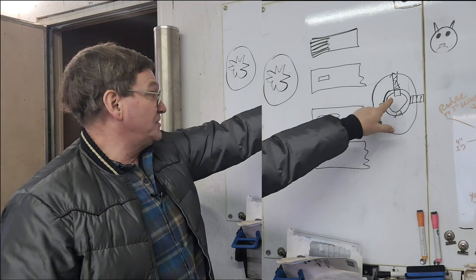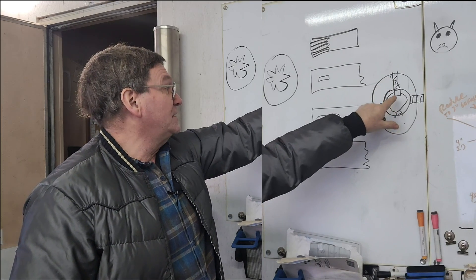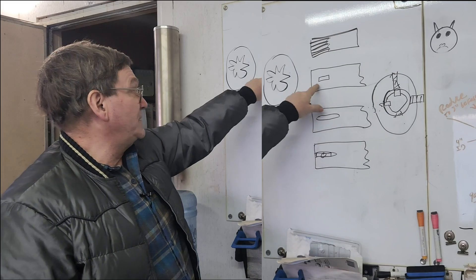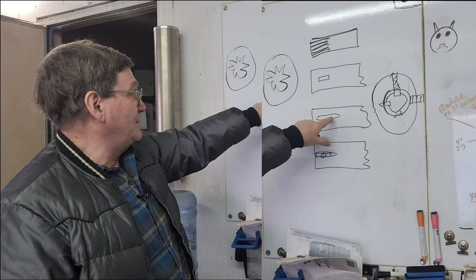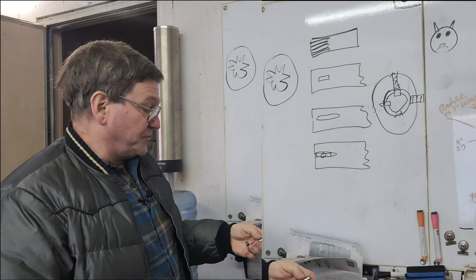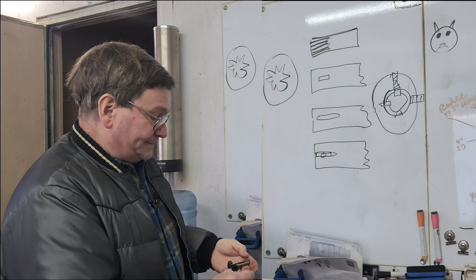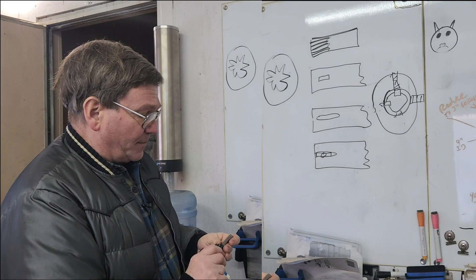Now, to take care of the problem of if we don't have a set screw over this for keeping the key from falling out, we can take care of that by doing one of the captured methods, which here would be just a fact we milled a pocket in here that is captured. Or we can use a Woodruff key, half moon key.